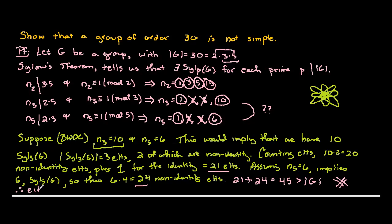We can therefore conclude that either N₃ equals 1 or N₅ equals 1, meaning that either our Sylow-3 subgroup or our Sylow-5 subgroup is normal in G. Thus G is not a simple group.